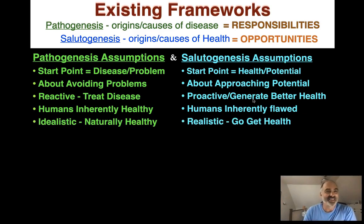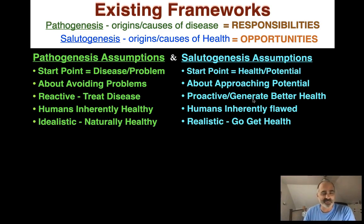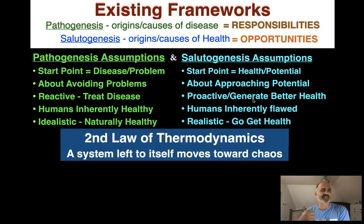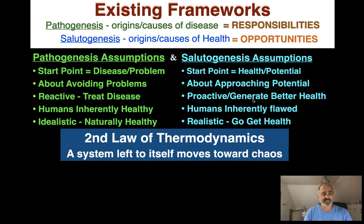So pathogenesis, even though it's about disease, is very idealistic, saying that we're naturally healthy. For salutogenesis, although Antonovsky, the developer of salutogenesis, called it pessimistic, it's really realistic because it says bad things happen, so we need to cause ourselves to be as healthy as we possibly can be. This is really just the second law of thermodynamics: a system left to itself will move towards chaos. If we're not going to do anything to make ourselves healthy and well, bad things happen. If we want good things to happen, we have to cause them to happen.